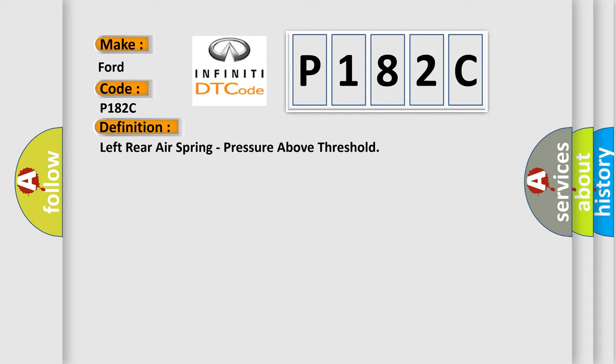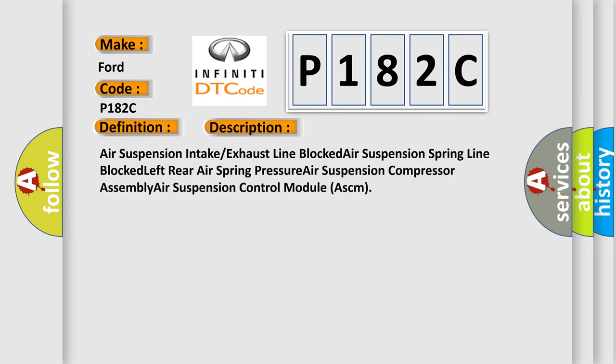And now this is a short description of this DTC code: Air suspension intake exhaust line blocked, air suspension spring line blocked, left rear air spring pressure, air suspension compressor assembly, air suspension control module ASCM.